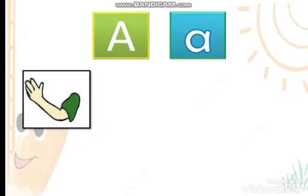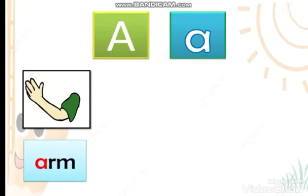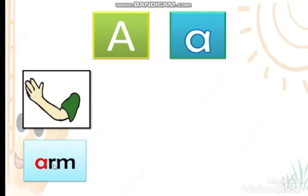Look at this letter — what can you see? It's an arm! Arm. So the sound of the letter A is — arm, arm. Repeat after me please, say the name: arm.